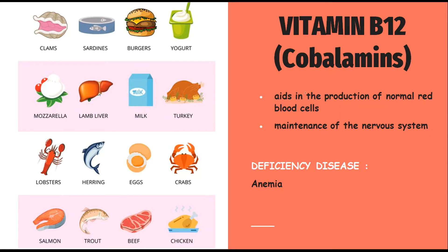Next, vitamin B12, cobalamin. It aids in the production of normal red blood cells in our body and maintains and stimulates our nervous system. It also coordinates activities inside our brain. The deficiency disease caused due to vitamin B12 is anemia. Food sources containing vitamin B12 include clams, burgers, yogurt, milk, lamb liver, mozzarella, lobsters, eggs, crabs, chicken, trout, salmon, and beef.